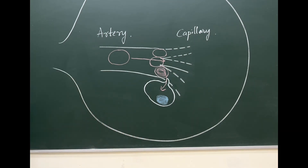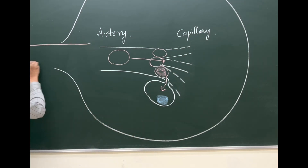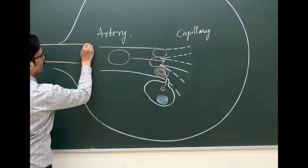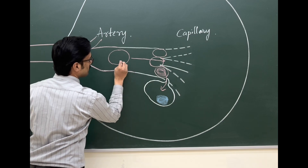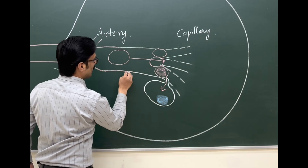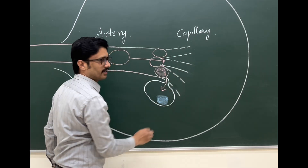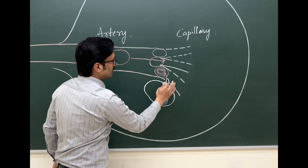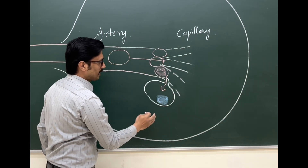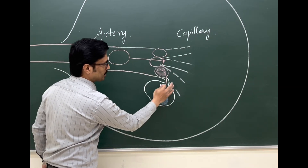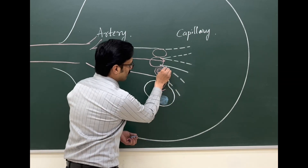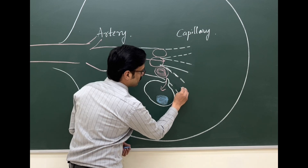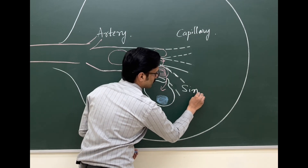Within the spleen, the splenic artery enters and divides into multiple branches. The RBCs circulate through these branches and when they reach the splenic sinusoids, they get trapped. The macrophages are close to the venous sinusoids — the capillaries of the spleen, which we call sinusoids or sinuses.